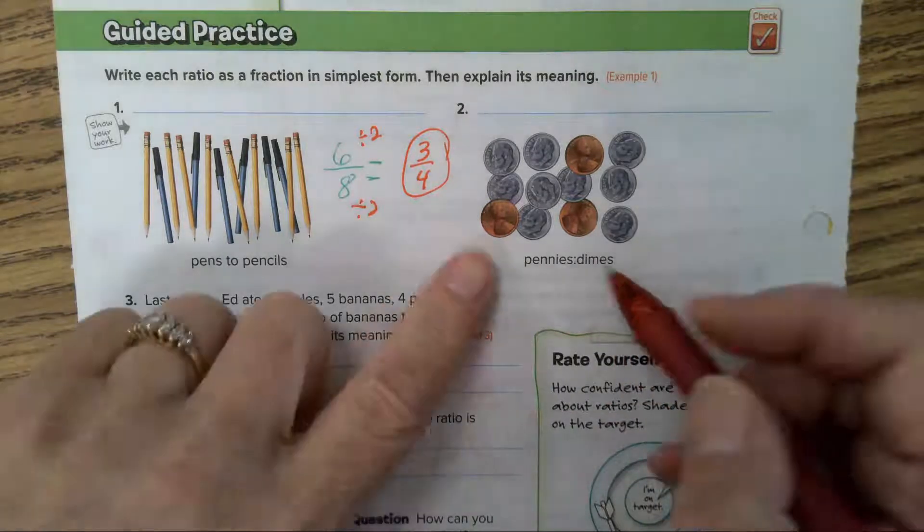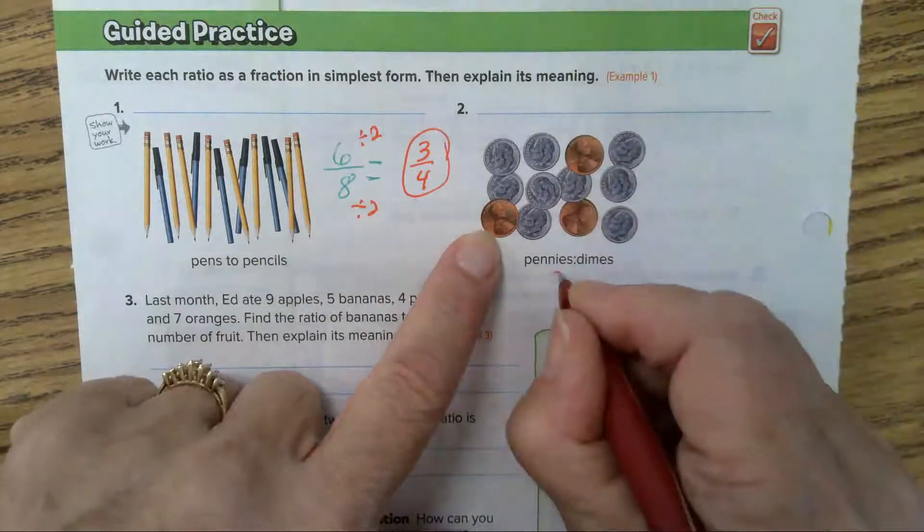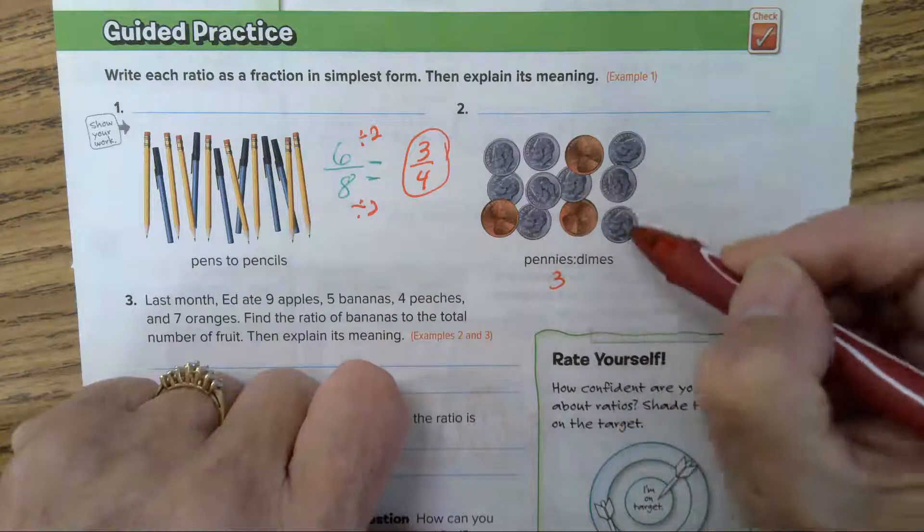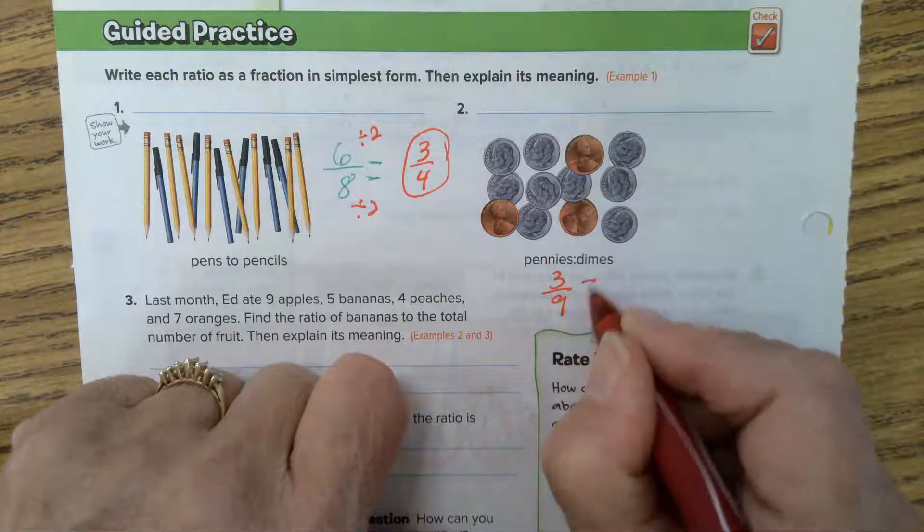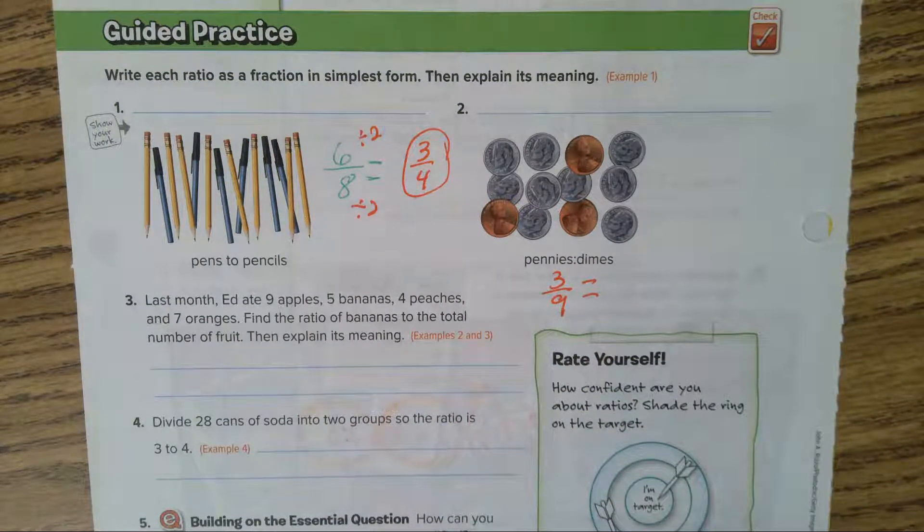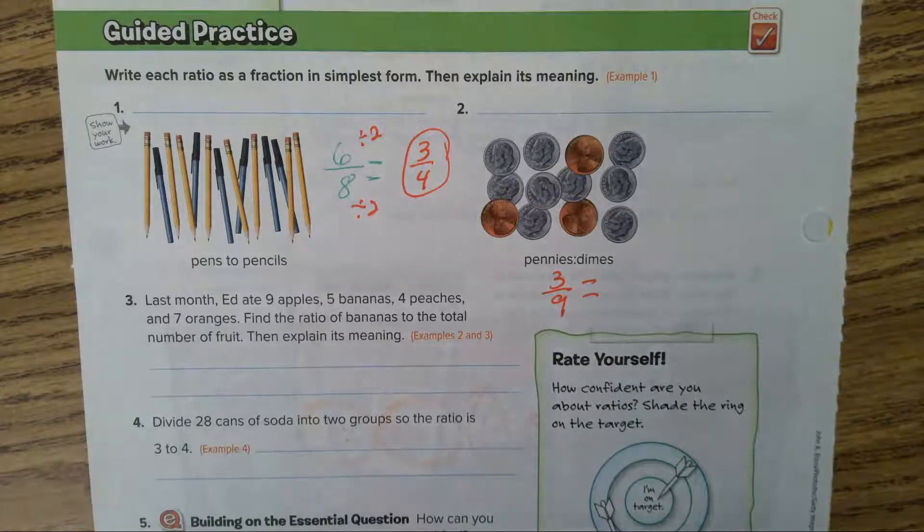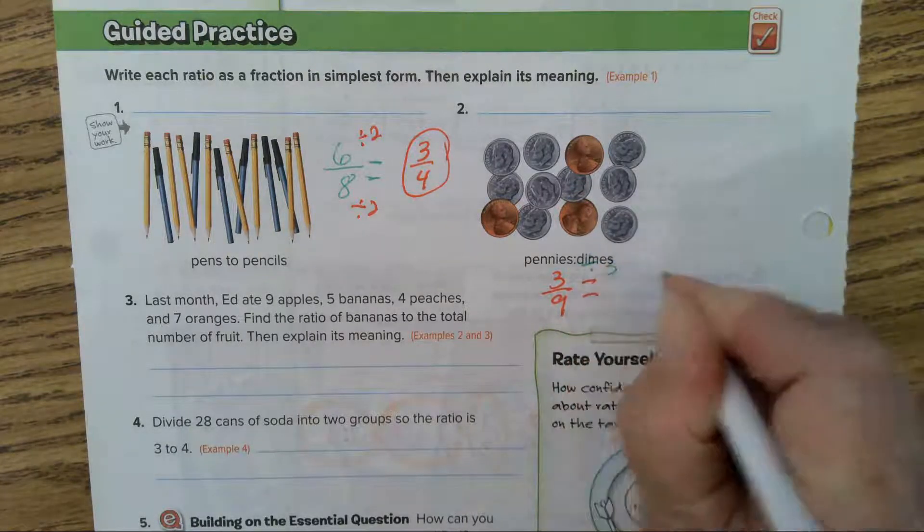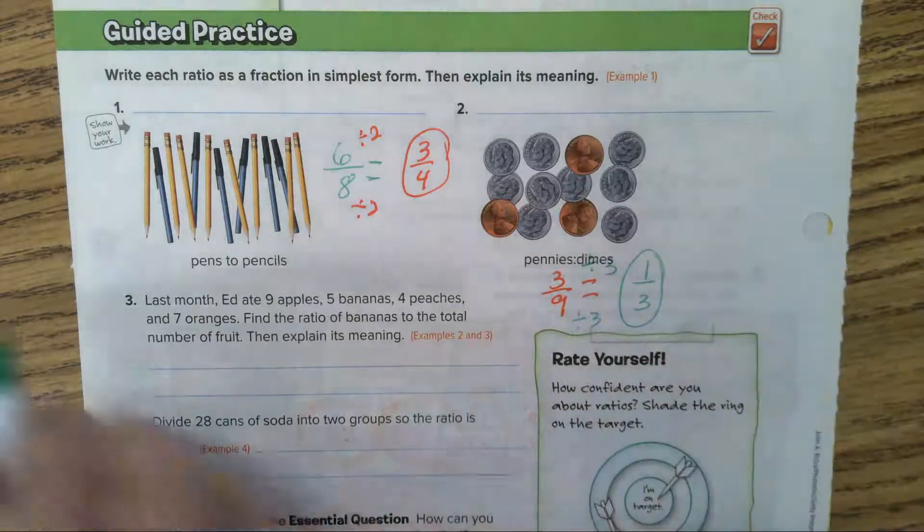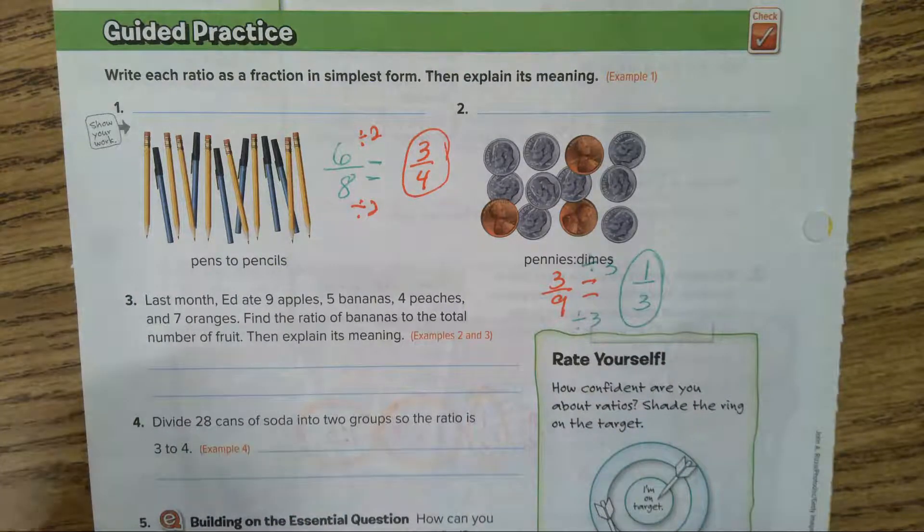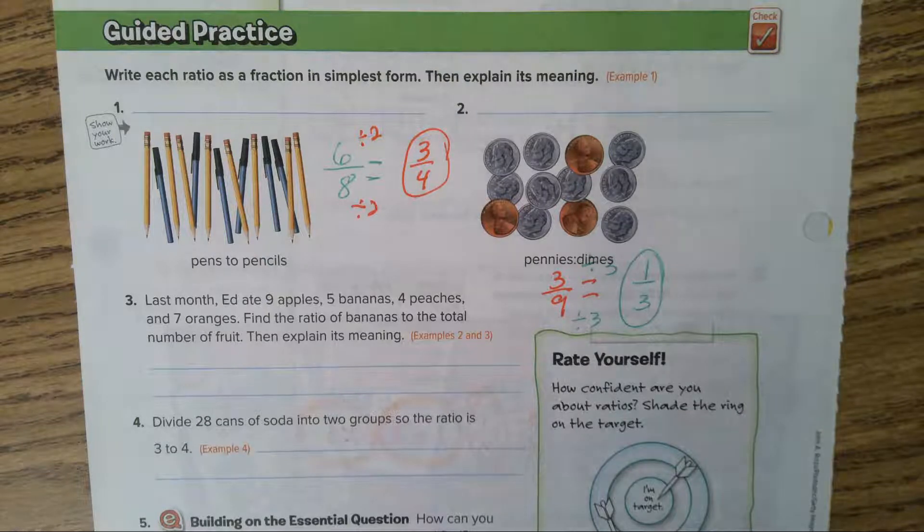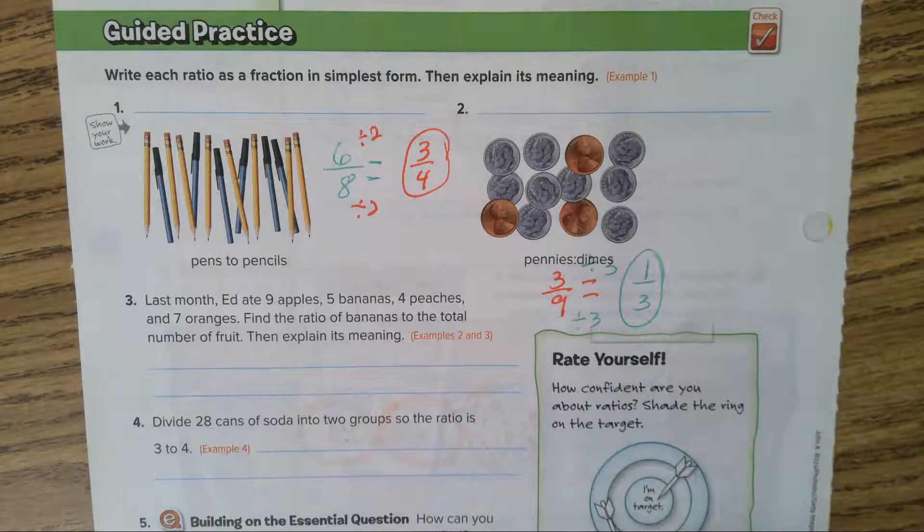Here we have pennies and dimes. Pennies has to be on top, so 3 pennies and 9 dimes. 3 over 9, we have to simplify. What will divide 3 and 9? Three. 3 divided by 3 is 1, 9 divided by 3 is 3. The answer is 1/3. One penny to 3 dimes.